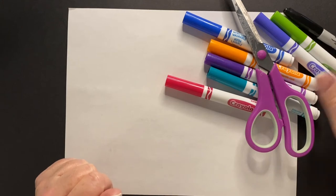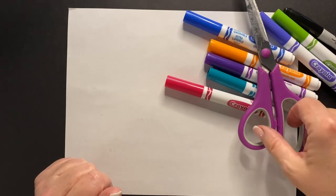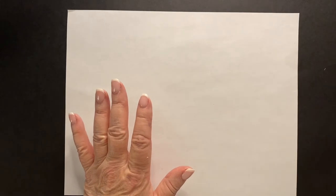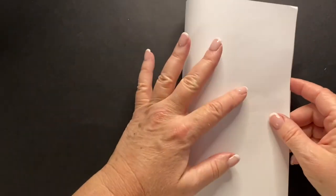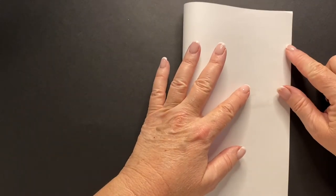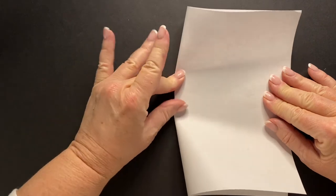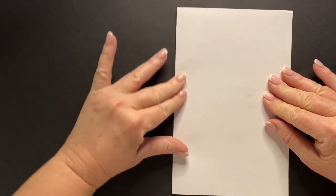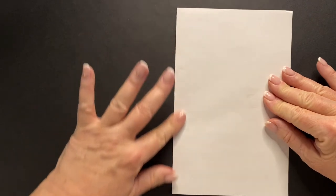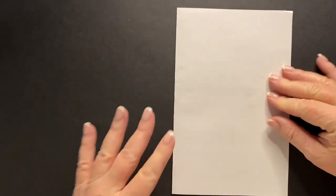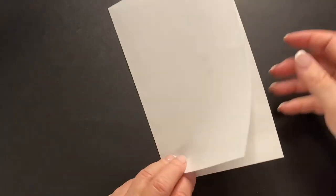So, sharpie, markers or crayons, scissors, piece of copy paper. First thing you want to do is you want to fold your paper like you are going to make a card. So you want to make sure that you match the corners up, hold it in the middle, press down across the middle, squeeze it in the middle, and go from the middle out. And if you do that, really press down hard, you will always have a nice even edge. So just like you're making a card.